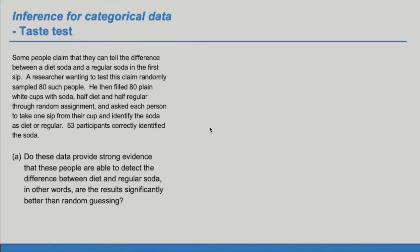Some people claim that they can tell the difference between a diet soda and a regular soda in the first sip. A researcher wanting to test this claim randomly sampled 80 such people. He then filled 80 plain white cups with soda, half diet and half regular through random assignment, and asked each person to take one sip from the cup and identify the soda as diet or regular. Fifty-three participants correctly identified the soda.